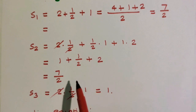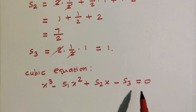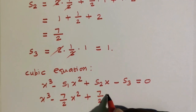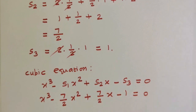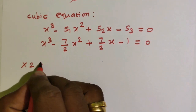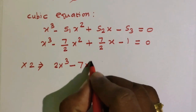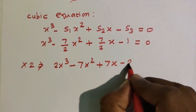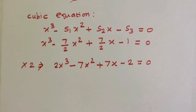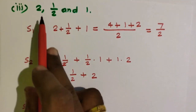s3 equals the product of the roots: 2 into 1/2 into 1, which equals 1. So s1 is 7/2, s2 is 7/2, and s3 is 1. Substituting into x cube minus s1 x square plus s2 x minus s3 equals 0 gives x cube minus 7/2 x square plus 7/2 x minus 1 equals 0. Multiplying through by 2: 2x cube minus 7x square plus 7x minus 2 equals 0. This is the required polynomial equation whose roots are 2, 1/2, and 1.